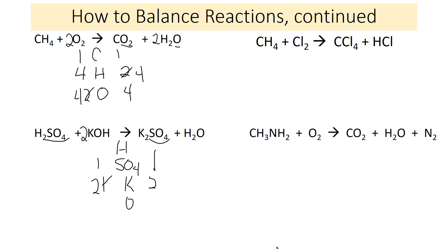For hydrogen: I have 2 from H₂SO₄ and 2 from the 2×KOH, giving 4 on the reactant side, but only 2 on the product side. I put a 2 in front of water, giving 4 — hydrogen is balanced. For oxygen (not counting the SO₄ oxygens since those are already handled): I have 2 from KOH on the reactant side and 2 from water on the product side — so oxygen is balanced as well.